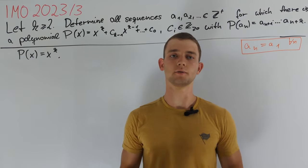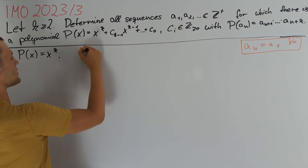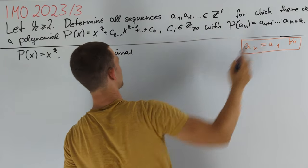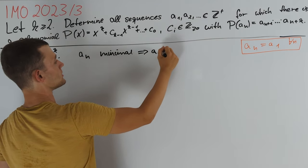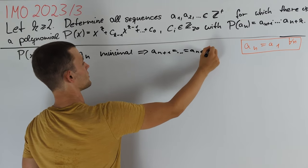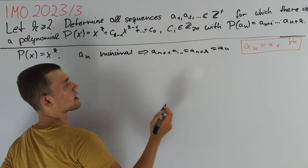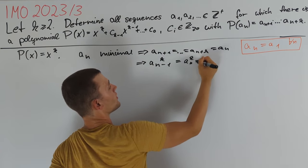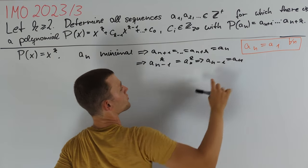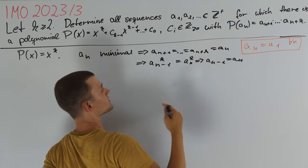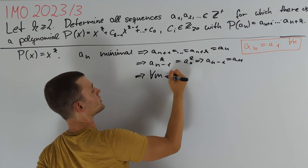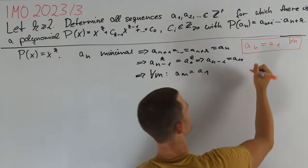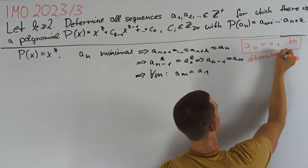We guess that constant sequences are the only solutions in this case. To prove it, consider a_n with minimal value. Then a_n^k equals a_{n+1} times ... times a_{n+k}, so all of a_{n+1} up to a_{n+k} must equal this minimal value a_n. Plugging these into the equation for a_{n-1}, we get a_{n-1}^k equals a_n^k, so a_{n-1} equals a_n. By a forwards-backwards induction, a_m equals a_1 for all m greater than or equal to 1.